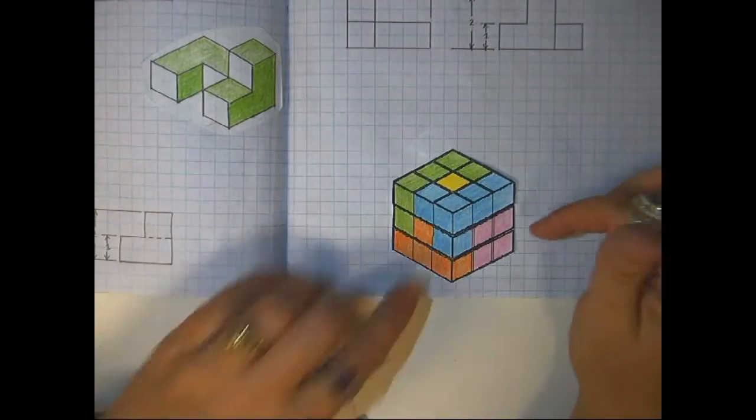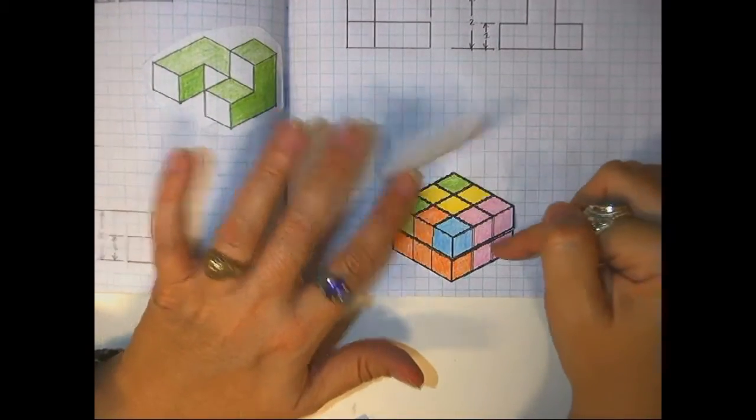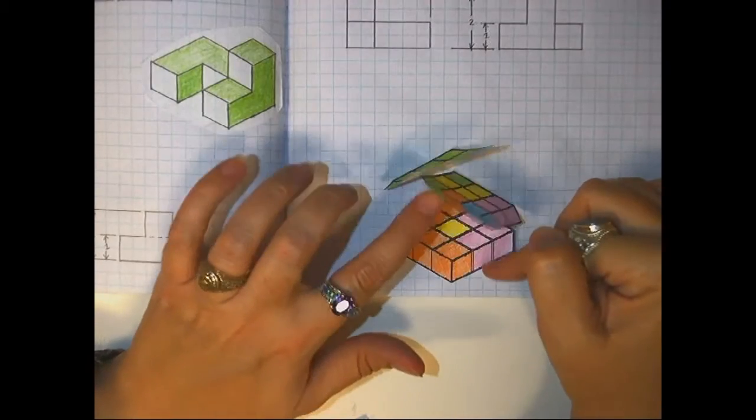You're going to get these and then color them like this so that you can see each layer, what colors are on each layer of your puzzle cube.